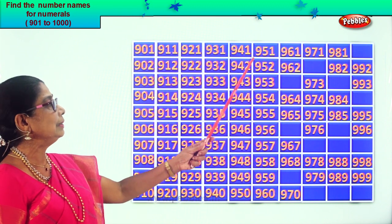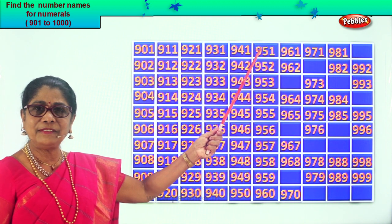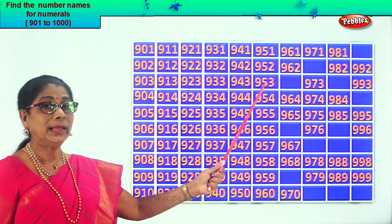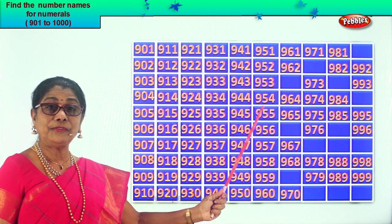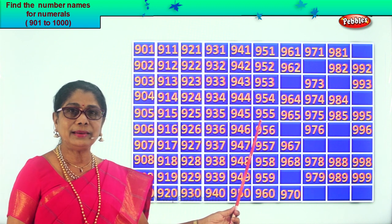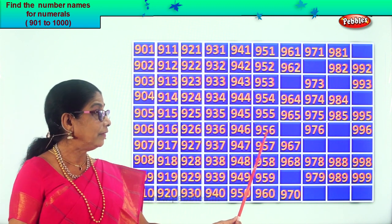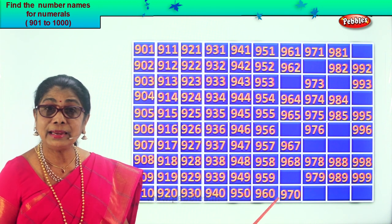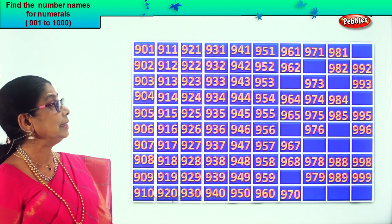Come, let's say together: 951, 952, 953, 954, 955, 956, 957, 958, 959, 960.